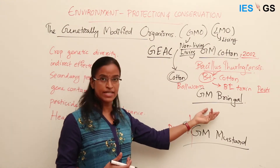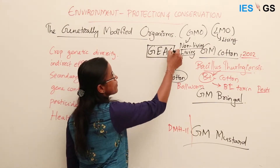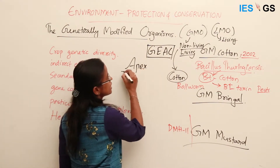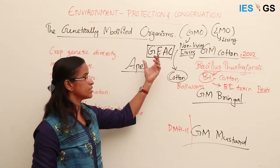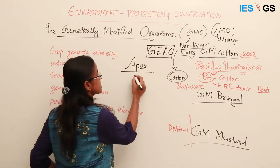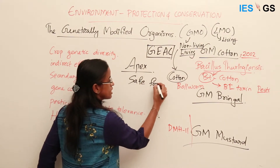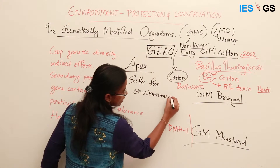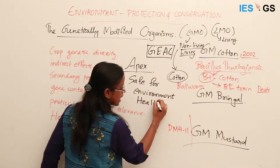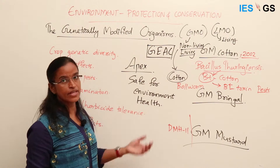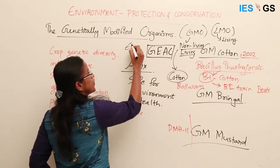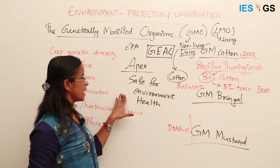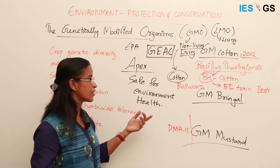After Bt cotton, India considered GM Brinjal. The Genetic Engineering Appraisal Committee (GEAC) cleared its release. The GEAC is the apex body that decides whether a genetically modified organism is safe for commercial release, safe for environmental release, and safe for human health. This body was created under the Environmental Protection Act and it cleared GM Brinjal as safe for release.